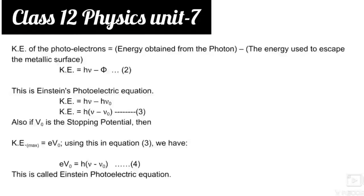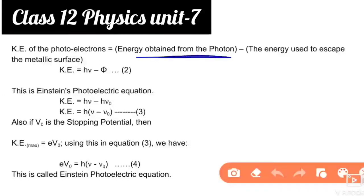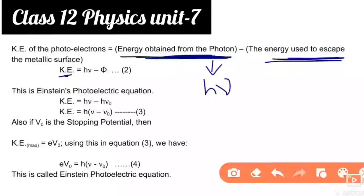So the kinetic energy of the photoelectron equals the total energy obtained from the photon minus the escape energy — the energy used to escape. Therefore: Kinetic Energy = hμ − φ₀, where φ₀ is the energy used for escape (work function). Write φ₀ here.